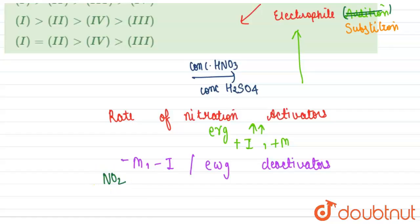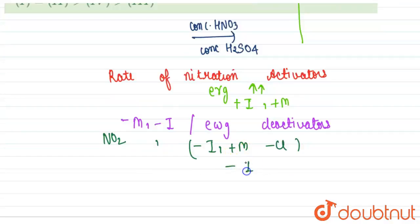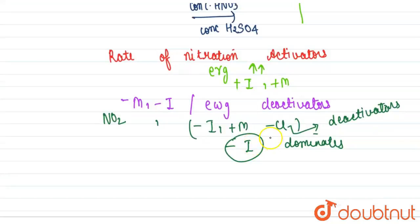We also know that chlorobenzene has minus I and plus M. Chlorine group shows minus I and plus M, but minus I dominates. Hence, chlorine will also be a deactivator for us.